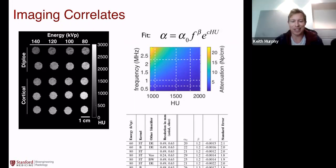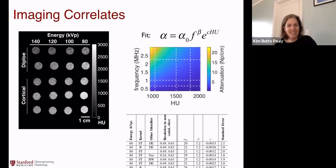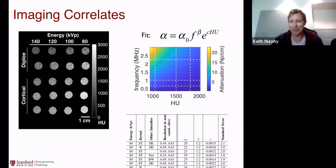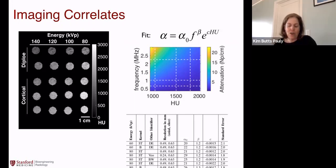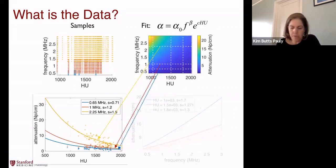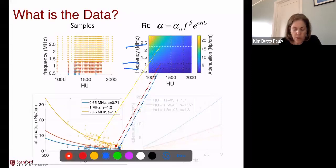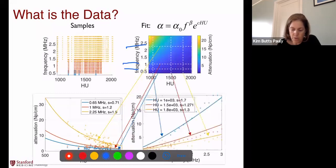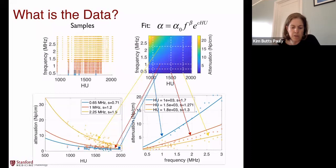It feels like a really good machine learning type problem — put in as much information as humanly possible and see if it gets you somewhere near the result. Yeah, absolutely. This is just showing the same data again — three different lines through the plot at three different frequencies, showing attenuation versus Hounsfield units — so we don't have to spend much more time there.